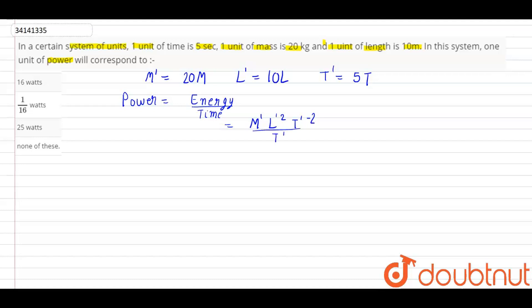This equals m' l' squared t' to the power minus 3.